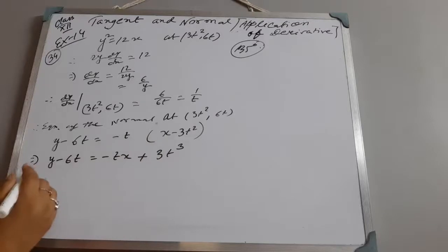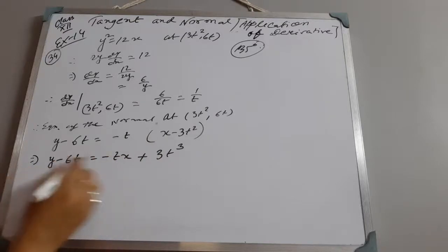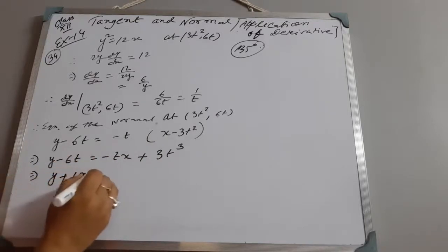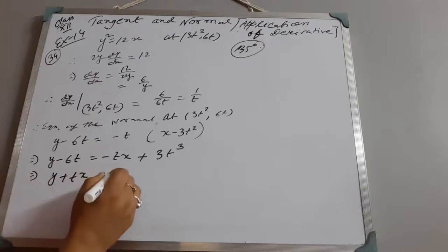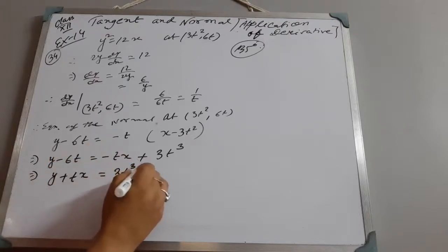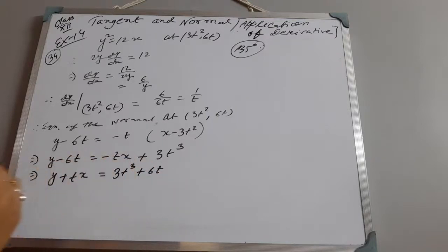Rearranging, we get y + tx = 3t³ + 6t. So the equation of the normal is y + tx = 3t³ + 6t.